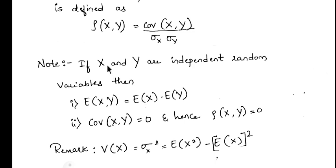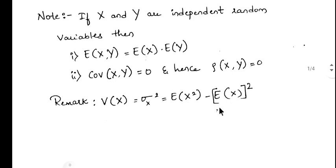We have to note some things: if x and y are independent random variables then E(xy) = E(x) times E(y). Similarly, covariance of x comma y equals 0, and when covariance is 0 the correlation rho(x, y) is also equal to 0. Note that V(x), the variance of x, equals sigma_x squared which equals E(x squared) minus [E(x)] squared.